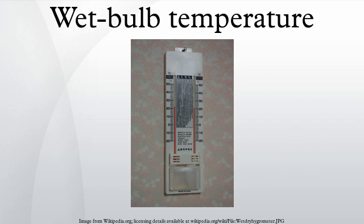The wet bulb temperature is the temperature a parcel of air would have if it were cooled to saturation by the evaporation of water into it, with the latent heat being supplied by the parcel. A wet bulb thermometer indicates a temperature close to the true temperature. The wet bulb temperature is the lowest temperature that can be reached under current ambient conditions by the evaporation of water only. It is the temperature felt when the skin is wet and exposed to moving air.